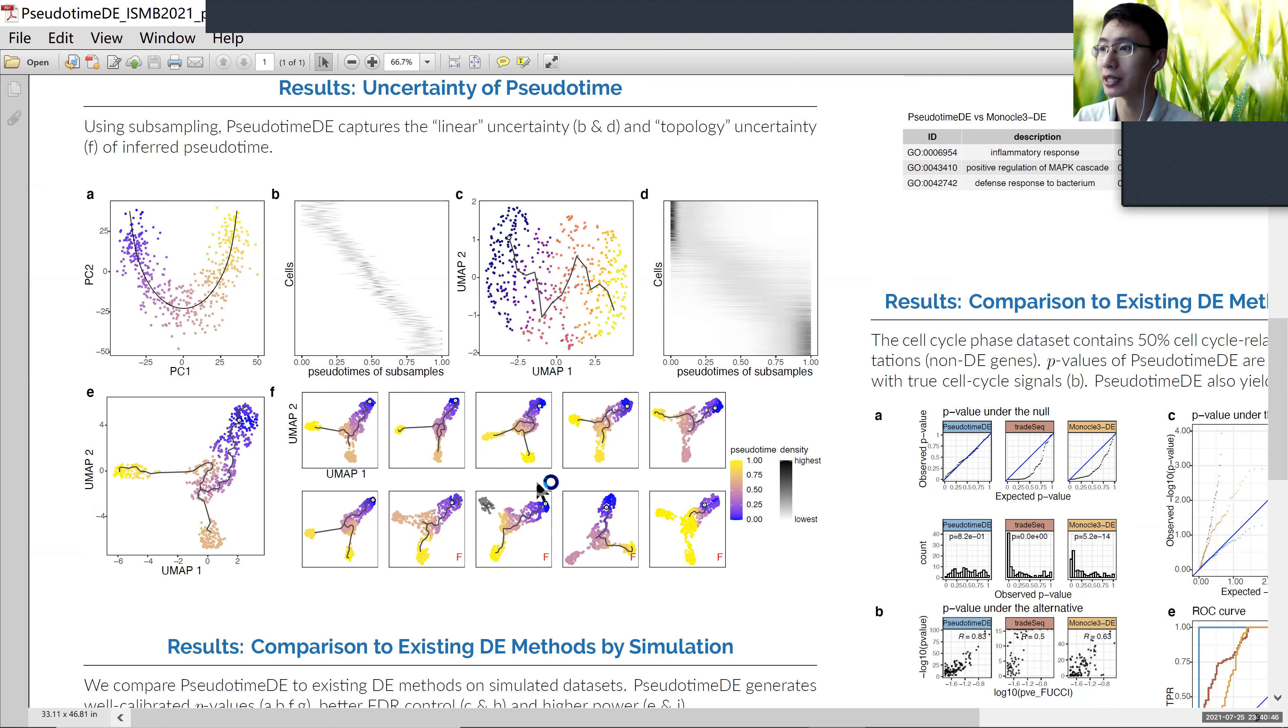Note that in our statistical model, we only consider the linear uncertainty because the topology uncertainty should be fixed before performing the PseudotimeDE method.